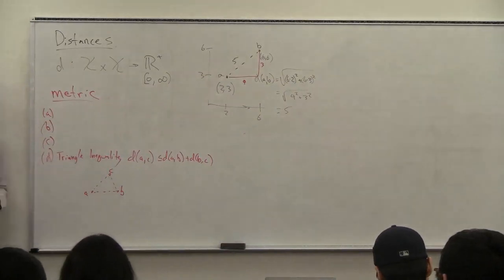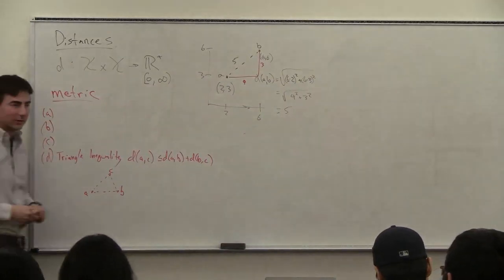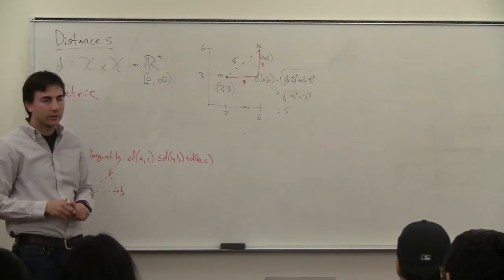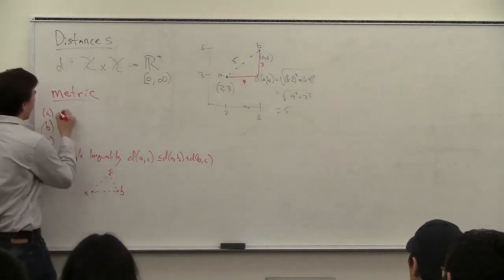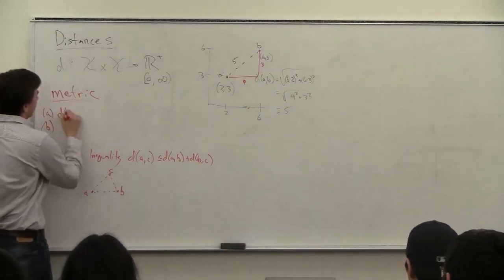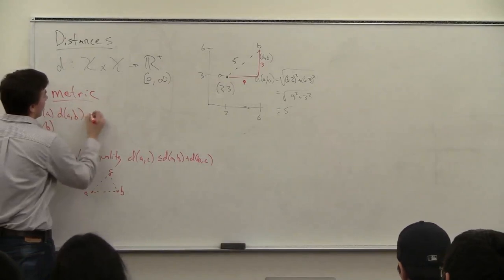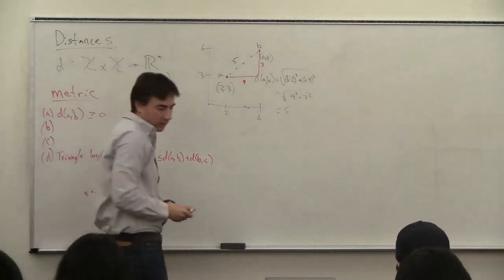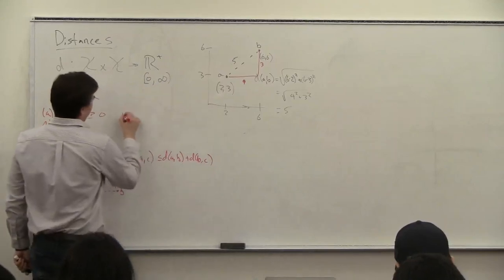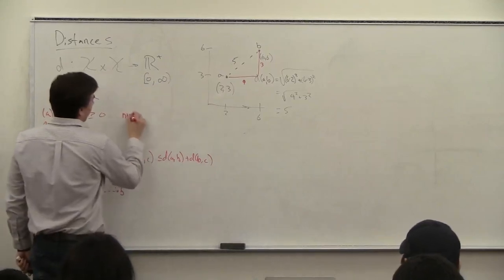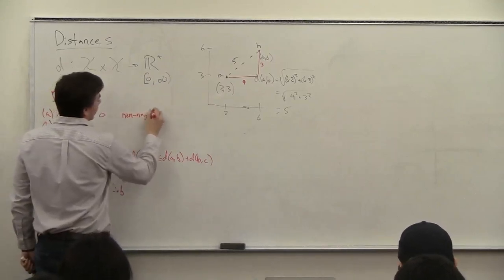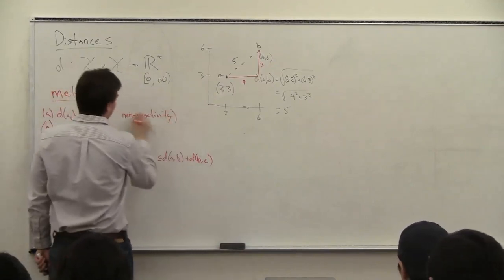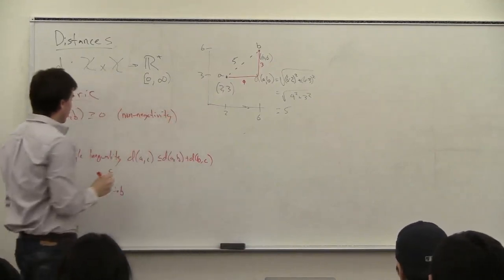What are other properties that you'd want in a distance? It should be positive: D(A,B) ≥ 0. So it's always non-negative.